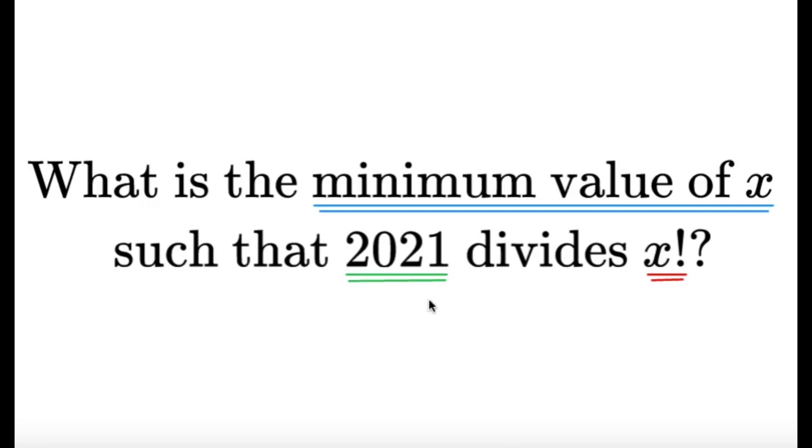Now, for you guys that aren't familiar with what this last part meant, or the 2021 divides x factorial, it simply means that x factorial is divisible by 2021. So it's just a fancy way to say that x factorial is divisible by 2021.